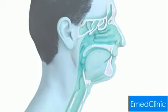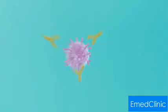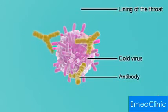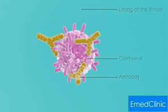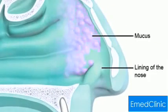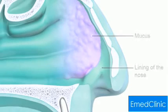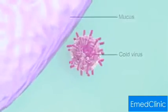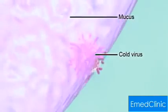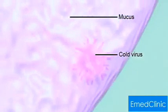Infection with a cold virus causes the immune system to produce antibodies which attach to the virus and destroy it. Your body also makes mucus which traps the virus. You may swallow the viruses so they are destroyed by the acid in your stomach, or they may be removed when you blow your nose.